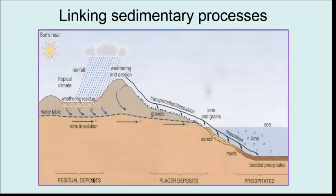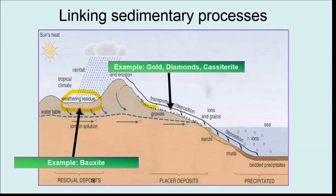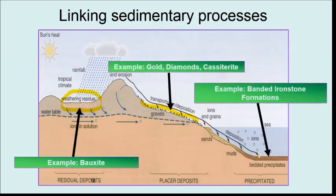Finally, in sedimentary processes, there are diagrams that link all processes together. It might give you a cross-section of continental crust and ask you to identify what type of sedimentary deposit occurs where. Heavy weathering of rock produces a leached bauxite deposit. As the river flows over the land through gravels, there'll be a placer deposit of gold, diamonds, or tin. Further along, precipitates in the sea can form a banded iron formation.